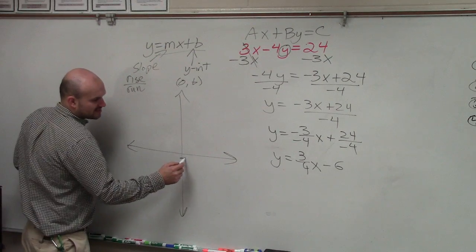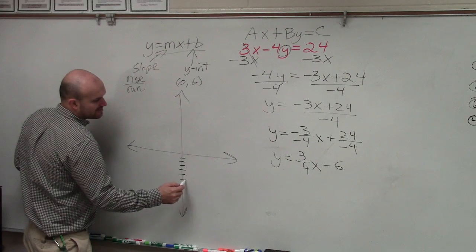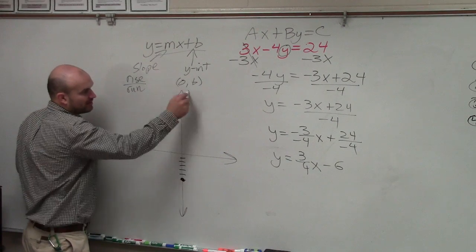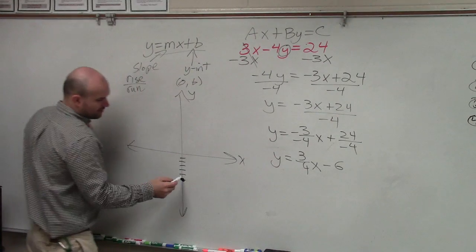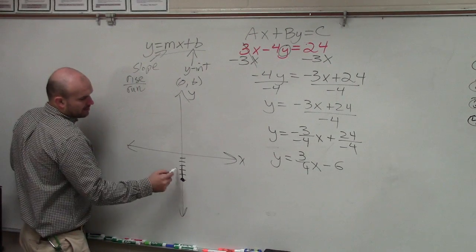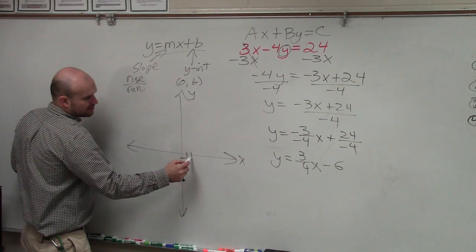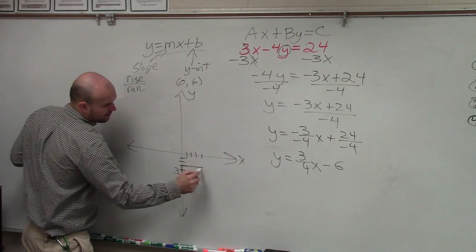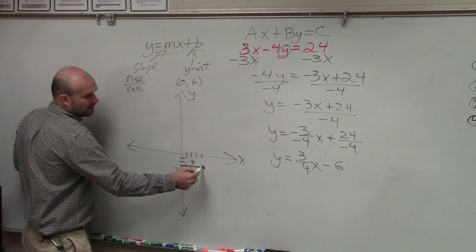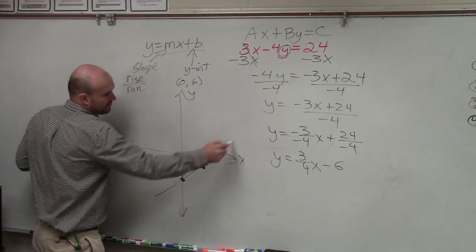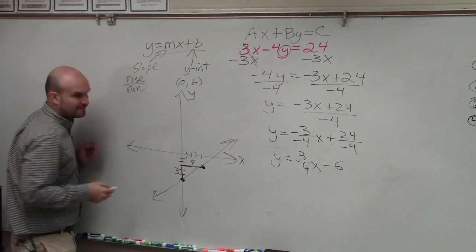So I go down to negative 6. 1, 2, 3, 4, 5, 6. Make a nice big point, because that's my y-axis. That's my x-axis. Now I use the slope, which tells me to go up 3. Up 3 units. Over 4. 1, 2, 3, 4. Over 4 units. Now I've used that ratio, up 3 over 4, to find my next point, and I graph this.